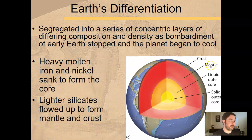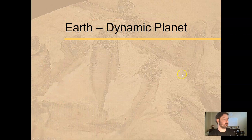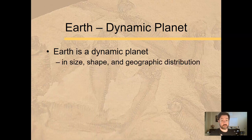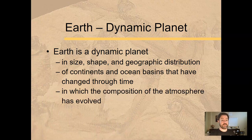So we have the mostly solid mantle, and then we have the solid crust. To recap: solid inner core, liquid outer core, mostly solid mantle, and then the solid crust. Remember, the Earth is a dynamic planet and it changes — that's how we started off this unit. It's changed in size and shape, in geographic distribution, where stuff is on the surface. The continents change, the ocean basins change, and that continues on through time.